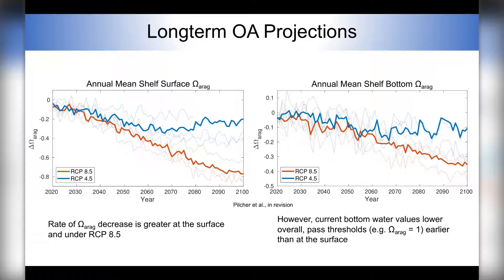Furthermore, the projected decrease is greater at the surface than at the bottom, though I will note that current bottom water values are actually lower overall. This means that bottom waters are projected to pass key thresholds, such as the omega equals one threshold, faster than at the surface.